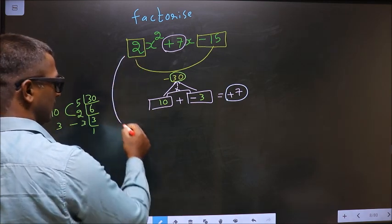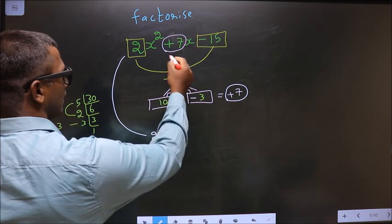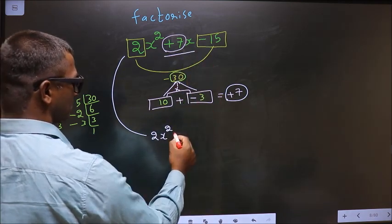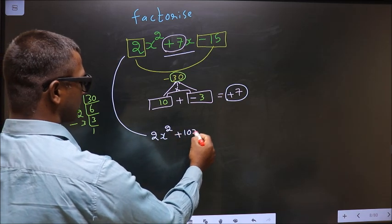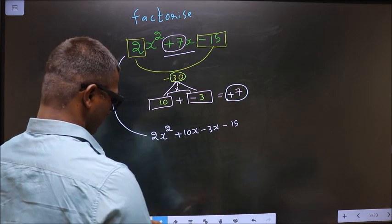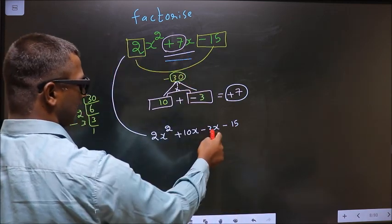Now this you change to 2x square. In place of 7x, you should write this plus 10x minus 3x minus 15. In place of 7x, I have written this.